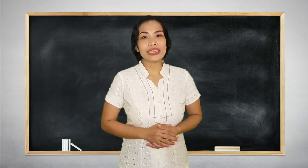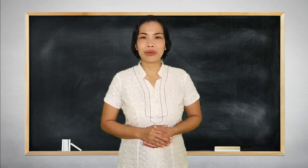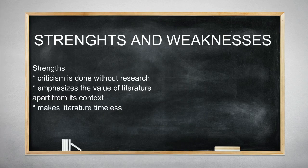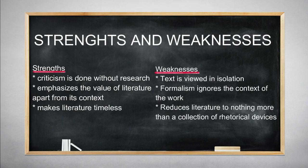What are the strengths and weaknesses of a formalist literary approach? Strengths: criticism is done without research; it emphasizes the value of literature apart from its context; and it makes literature timeless. Weaknesses: the text is viewed in isolation; formalism ignores the context of the work; and it reduces literature to nothing more than a collection of rhetorical devices.